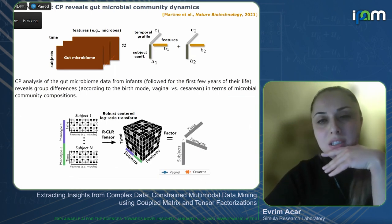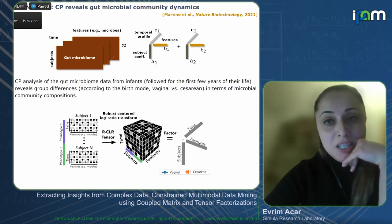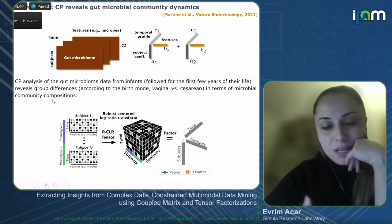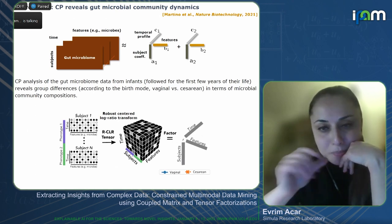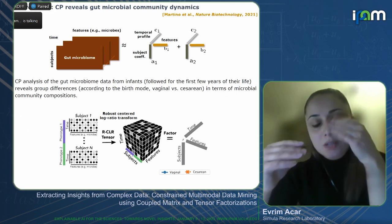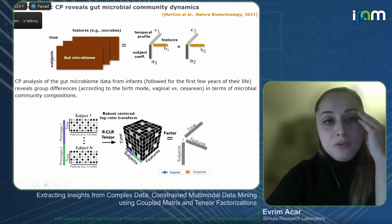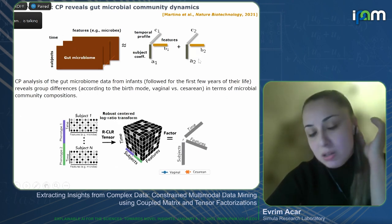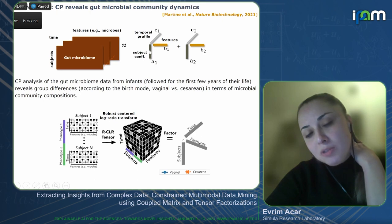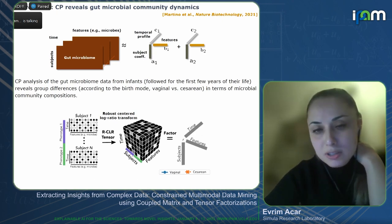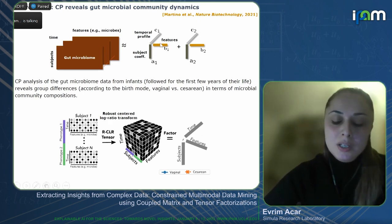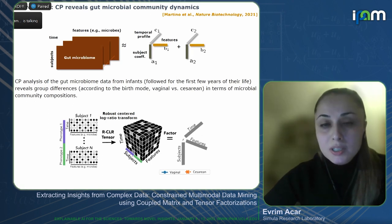Another recent interesting application involves gut microbiome data collected over time from infants during early life, arranged as a subject by feature by time tensor. Modeled using a CP model, the subject mode factors are used to group subjects according to their birth mode — natural versus C-section — and the feature mode reveals the microbial signature of the birth modes.